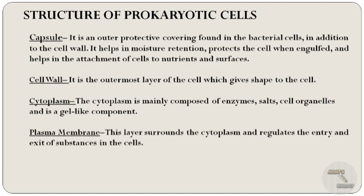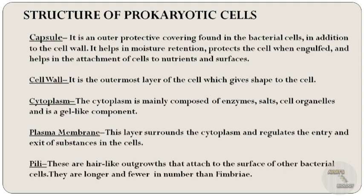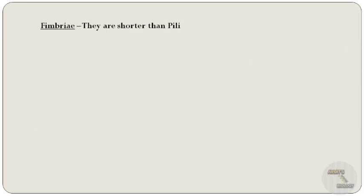The layer that surrounds the cytoplasm and regulates the entry and exit of substances in the cell is known as the cell membrane or plasma membrane. The protein tubes originating from the cytoplasmic membrane of many bacteria are known as pili and fimbriae. Pili are the longer hair-like structures originating from the cytoplasmic membrane — they are longer than fimbriae and fewer in number. Fimbriae are greater in number and shorter than pili.